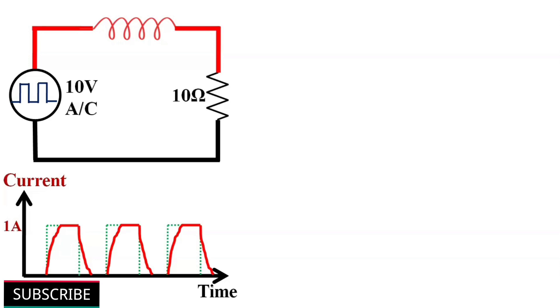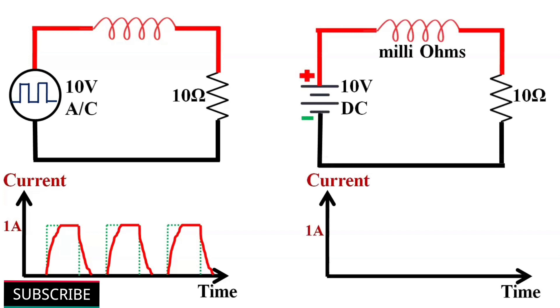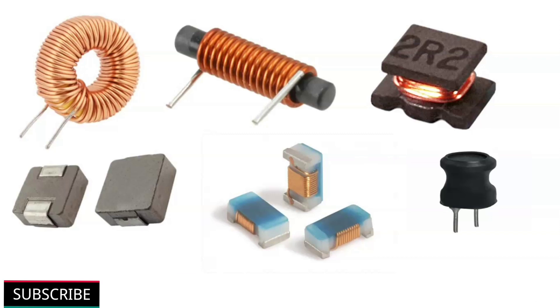In DC circuits, there is no change. They basically act as a piece of wire with a resistance of a few milliohms. In other words, inductors resist or oppose change of current, but will easily pass a steady DC current. Inductors in circuit boards will look like this.